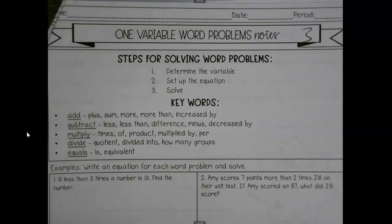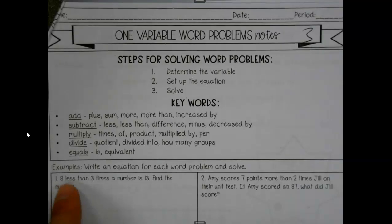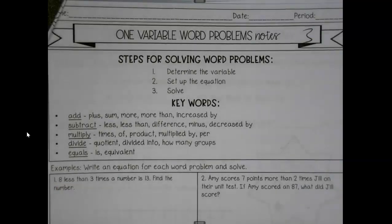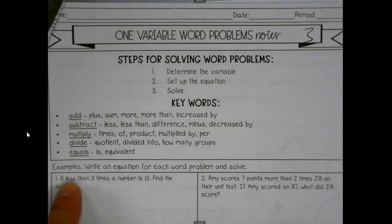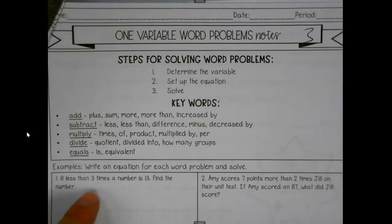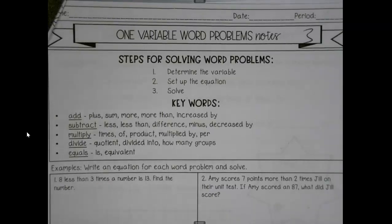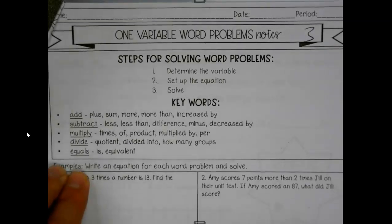Let's start real straightforward. Eight less than three times a number is 13, find the number. Okay, I'm finding the number, the number's the variable. Eight less than three times the number. Now sometimes I'll not even go in order. Wait, three times the number.